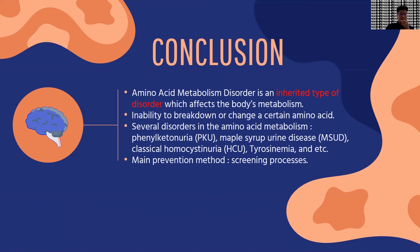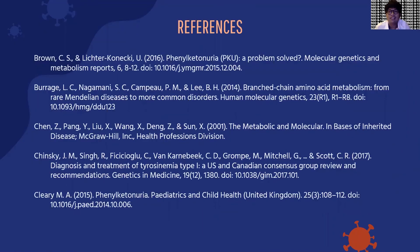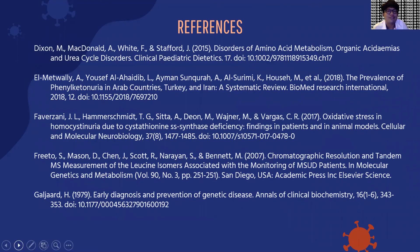The main prevention methods for these disorders are screening processes and having precautions through routine checks on offspring. Because most of these diseases are inherited through parental genes, if offspring are checked early, the aftermath of the disease can be treated earlier, thus reducing the overall impact.